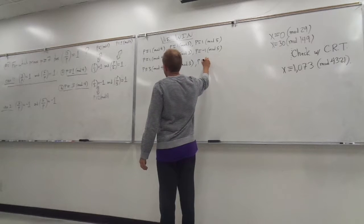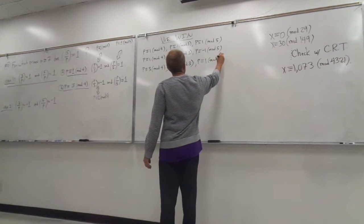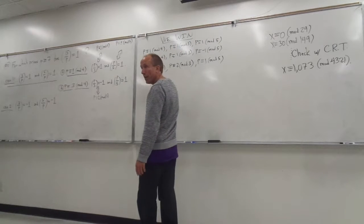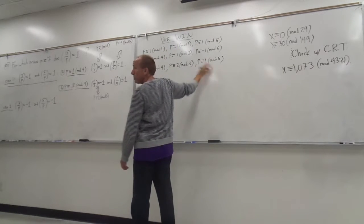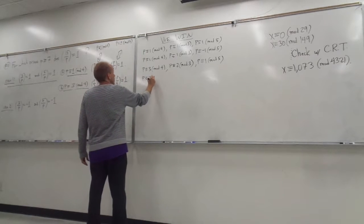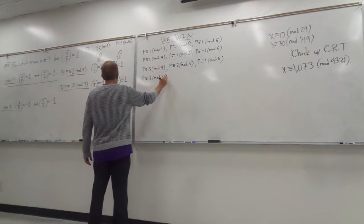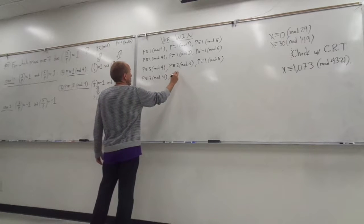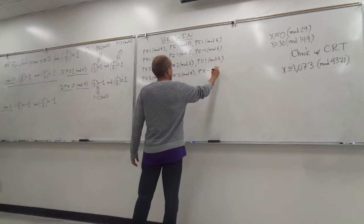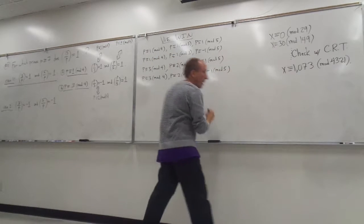And then, of course, p congruent to 1 mod 5, but then we have the same set of conditions with p congruent to negative 1 mod 5, right? So we also have p congruent to 3 mod 4, p congruent to 2 mod 3, and p congruent to negative 1 mod 5.